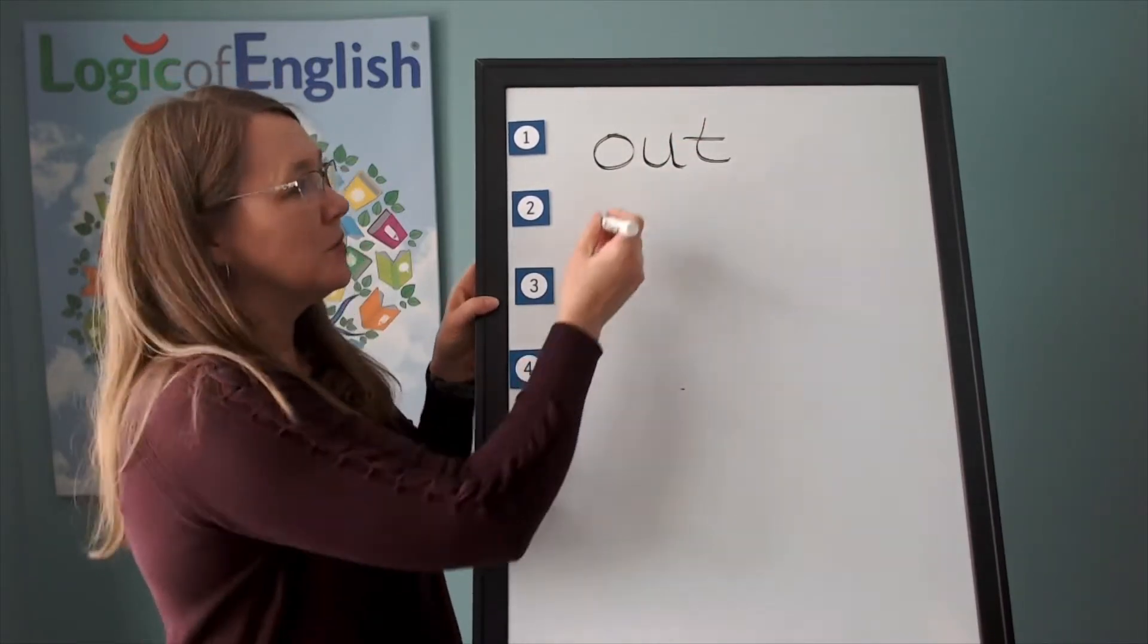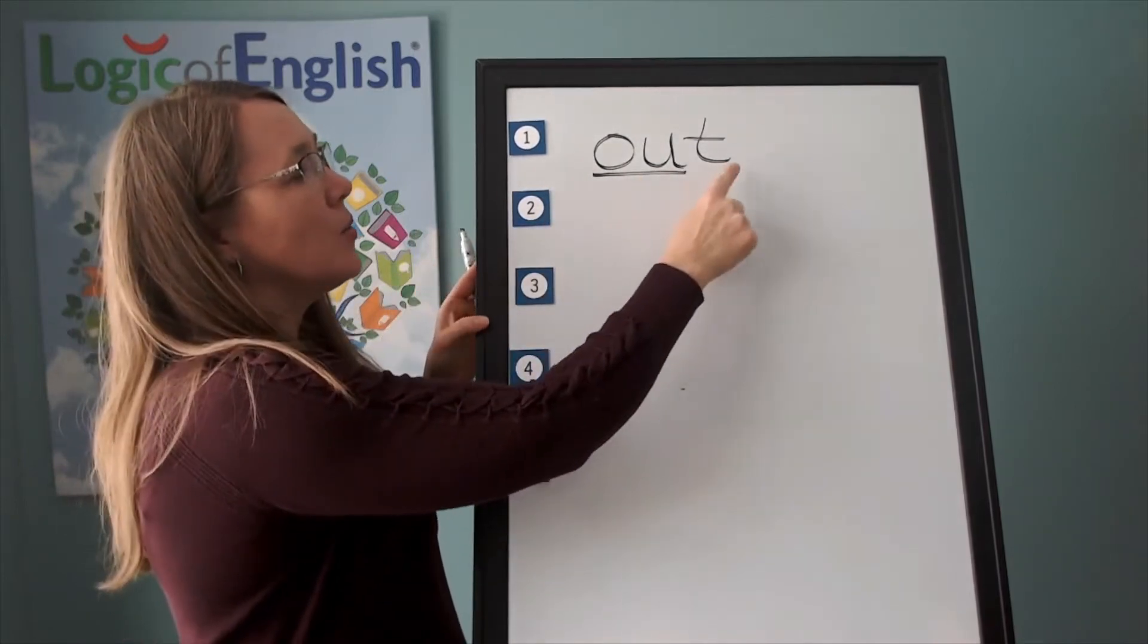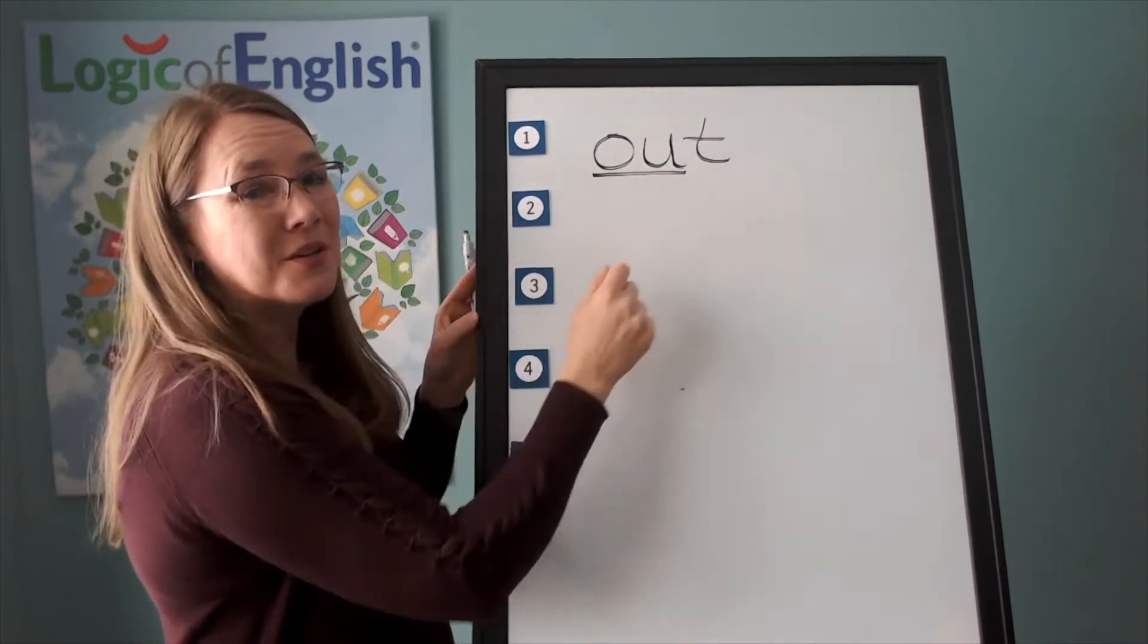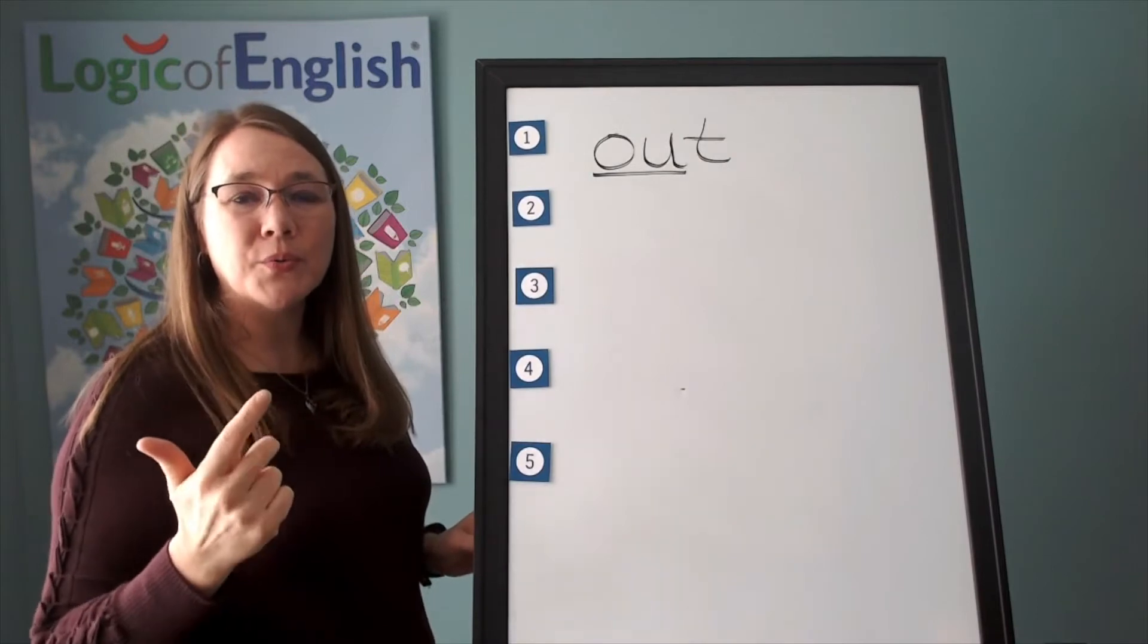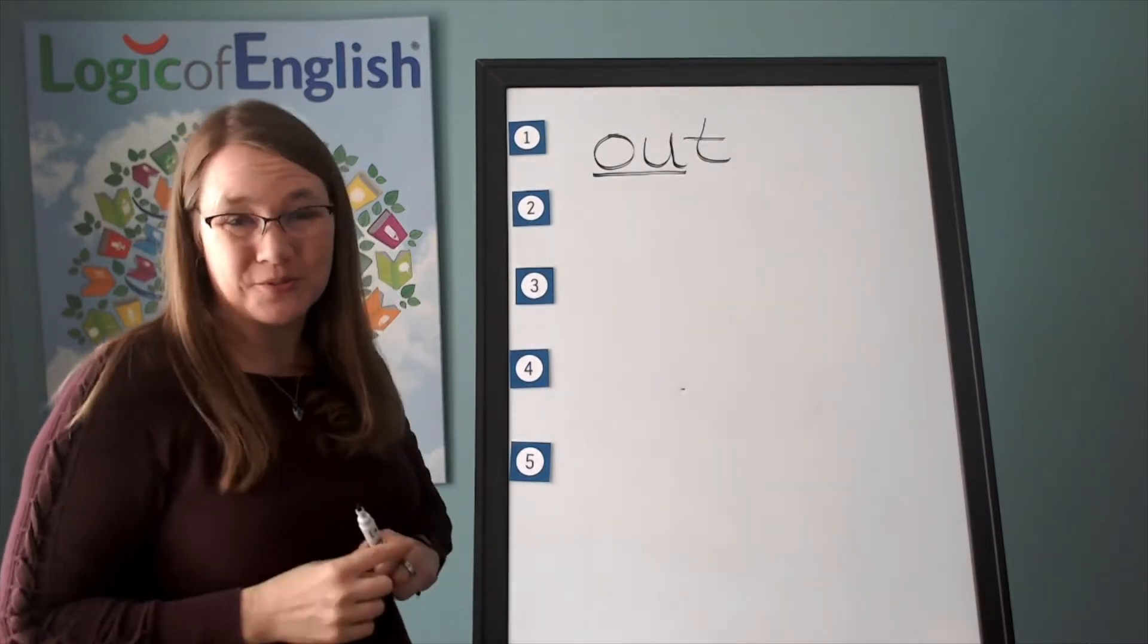Good. Now help me to write it. Ow, t. And how will we mark it? We'll underline the ow. Let's read it. Ow, t. Out. What sound of ow, o, oo, uh, uh did this say? It said its first sound. You're right. Ow.